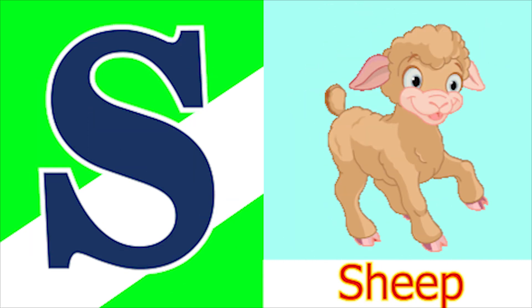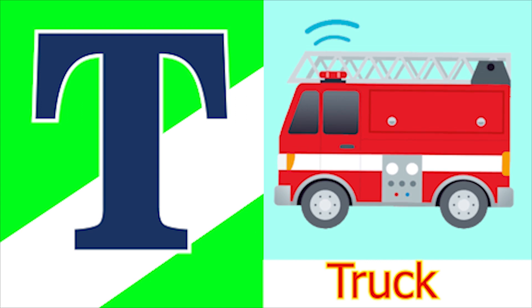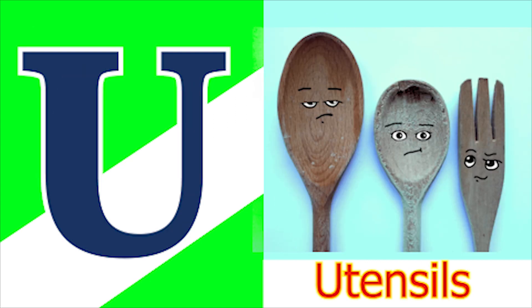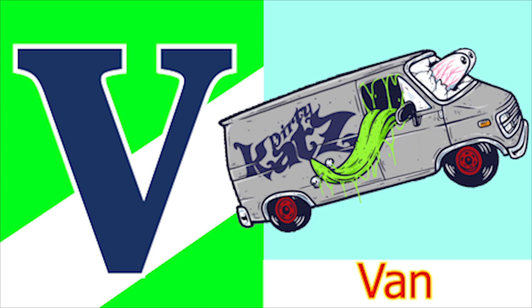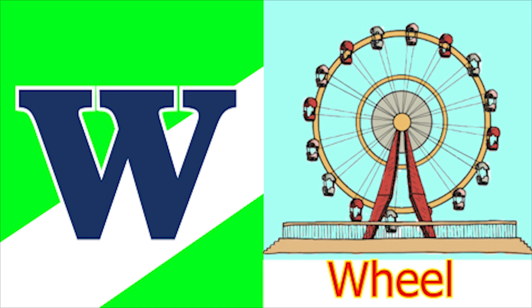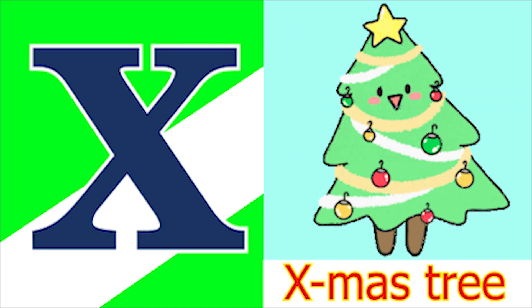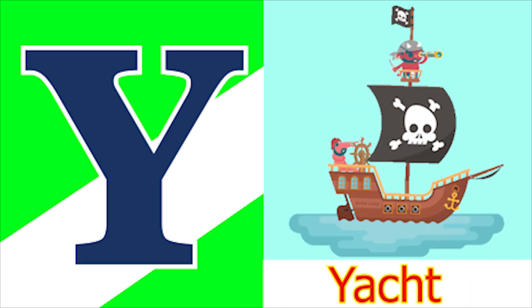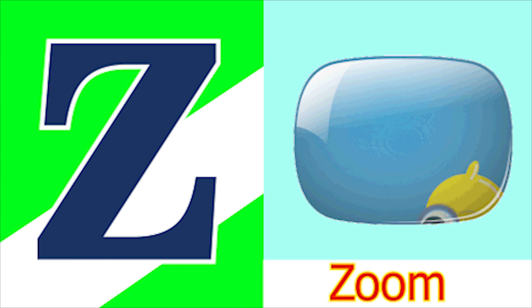S for sheep and T for tub, U for utensil, V for van, W for wheel and X for accessory, Y for yacht and Z for zone.